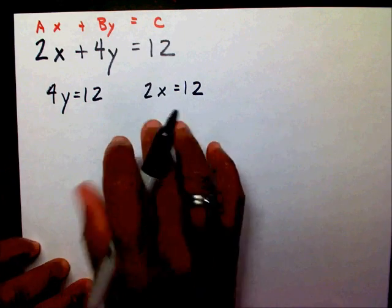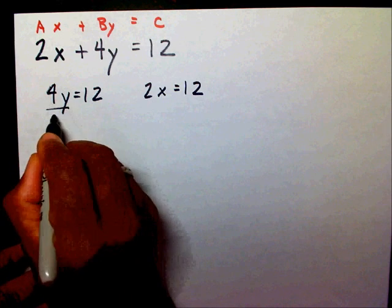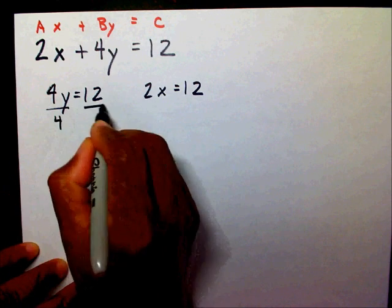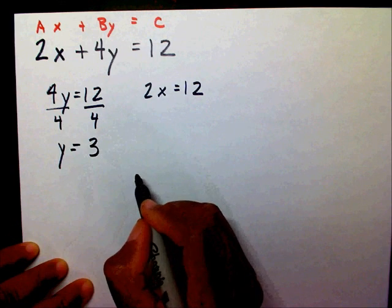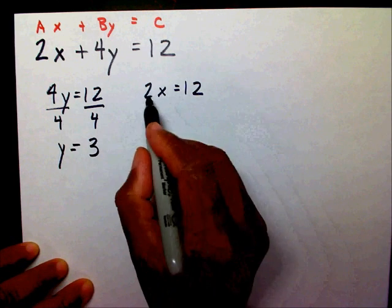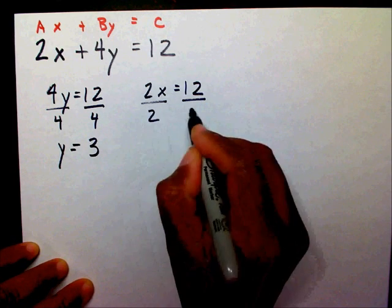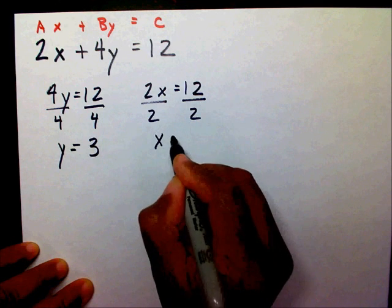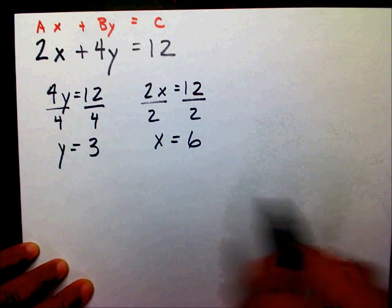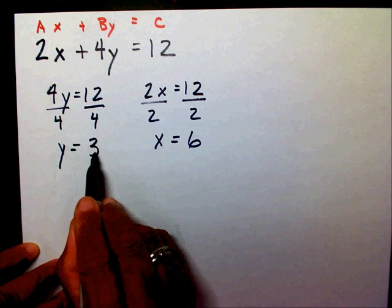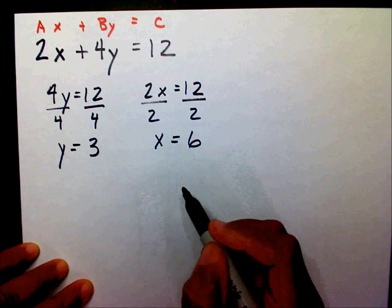Now that I have two equations, I'm going to solve both. I'm going to divide both sides by 4, so y equals 3. I'm going to solve for x — divide both sides by 2 — so x equals 6. Therefore, my y-intercept is 3 and my x-intercept is 6.